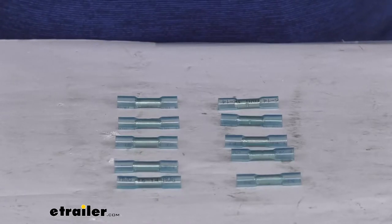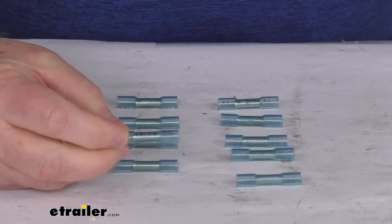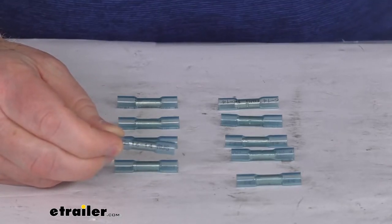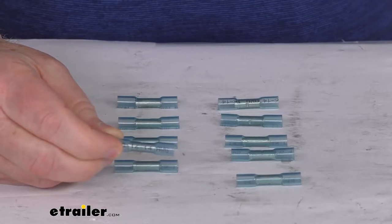Hello everybody, this is Jeff at eTrailer.com. Today we're going to take a look at the DECA blue butt connectors for the 16 to 14 gauge size wire. It is for a quantity of 10.